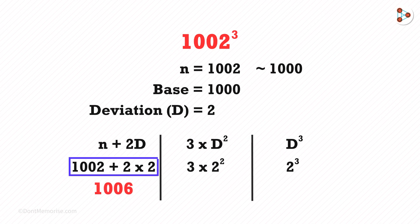The answer for this will be 1006. Just remember that the number of digits in the second and third parts will be equal to the number of zeros in the base. So 3 digits in the second part and the third part. 3 times 4 is 12. Because it's 3 digits, we write it as 012. 2 cubed is 8, hence we write it as 008, and here's our answer.